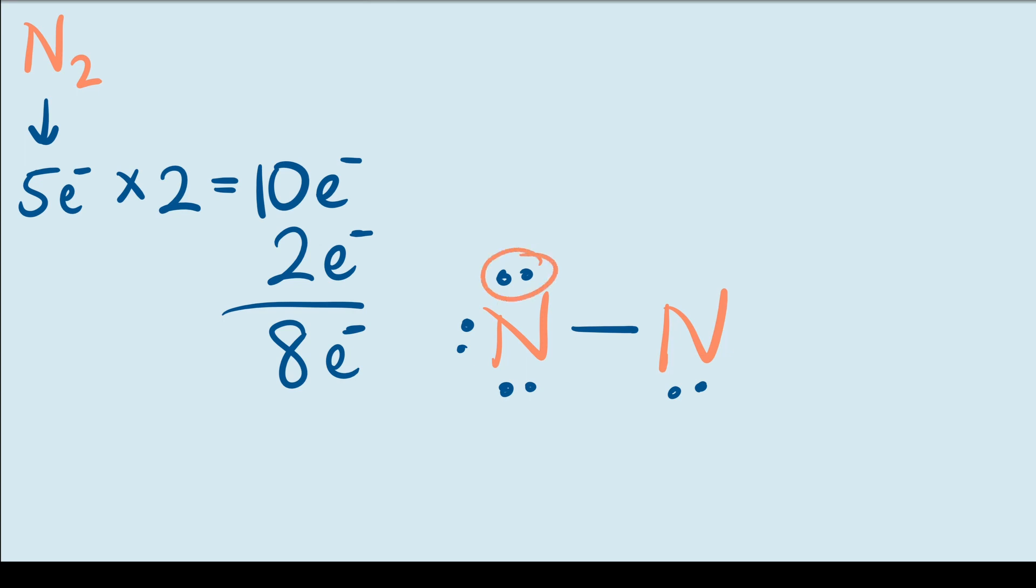We can fix this by taking a pair of electrons off of the left nitrogen atom and moving it here to make another bond. So we'll take away this pair and now the right nitrogen atom has six valence electrons, so we're going in the right direction but we need to keep going.